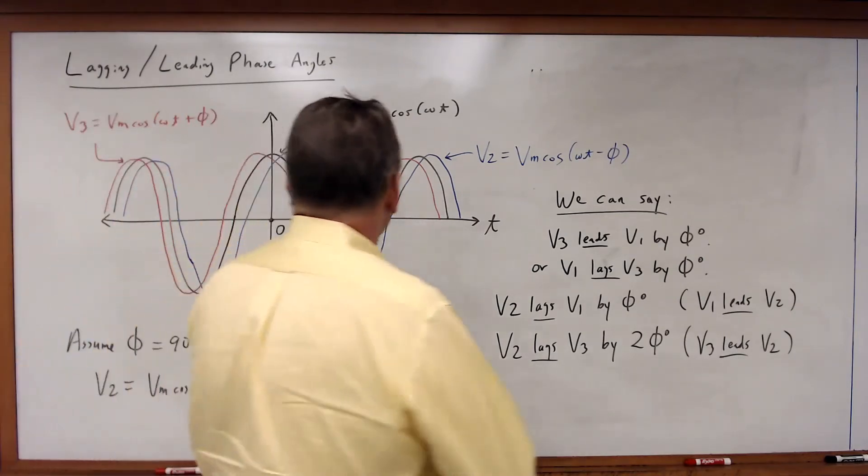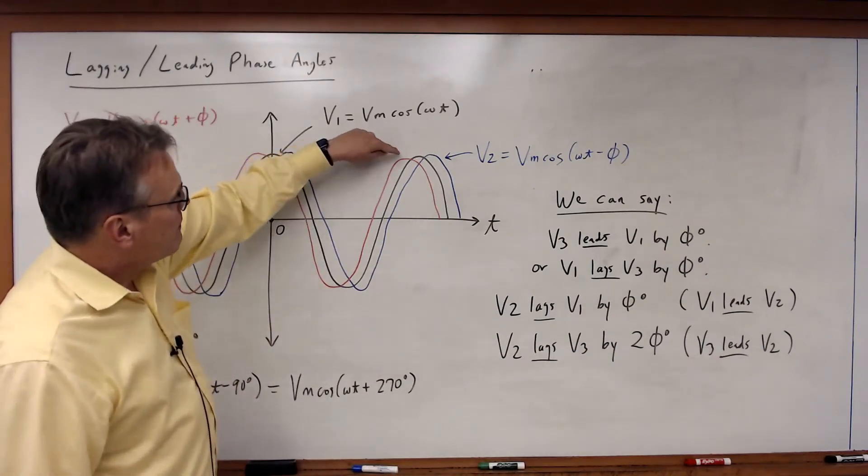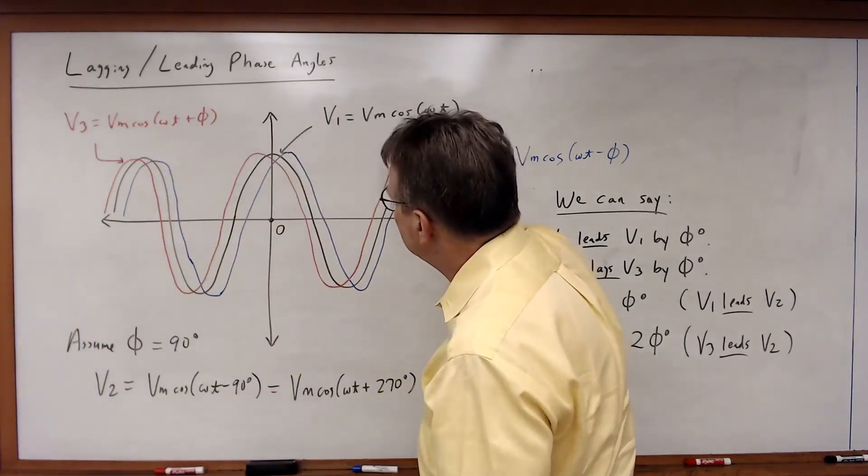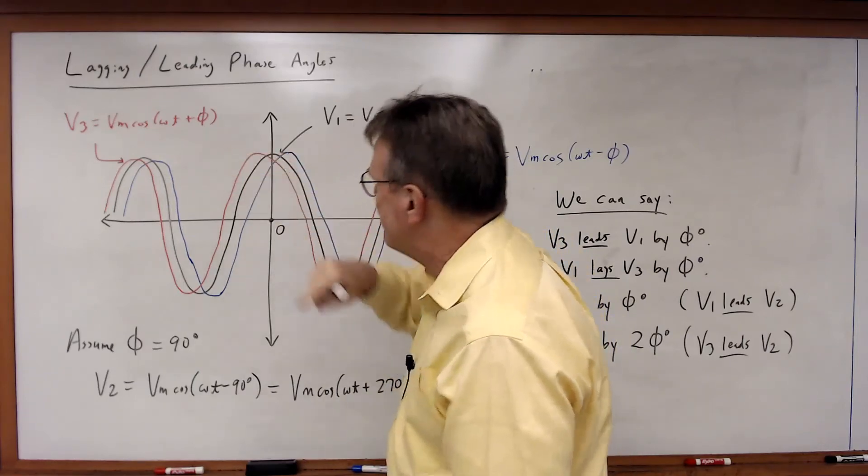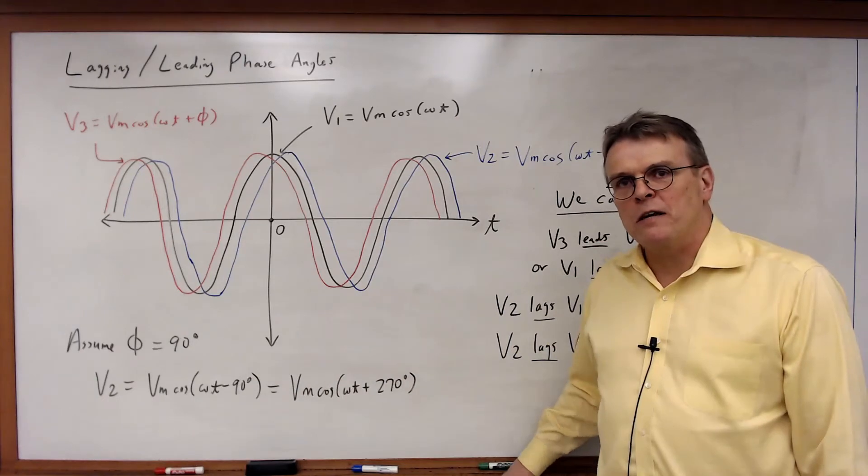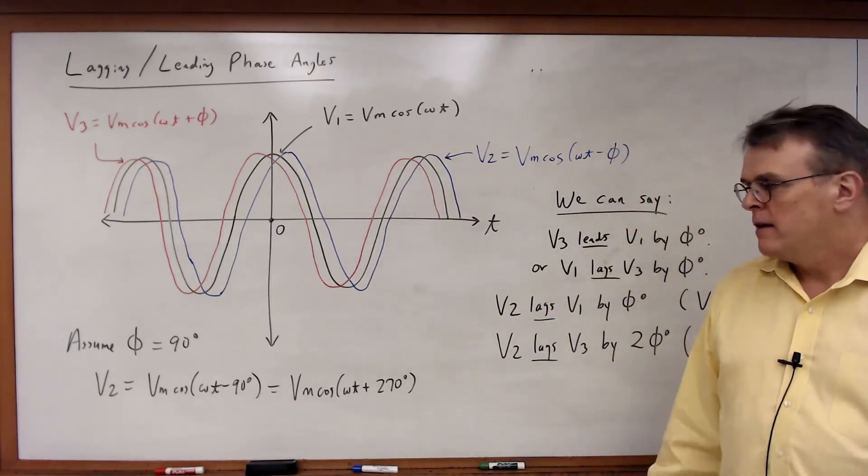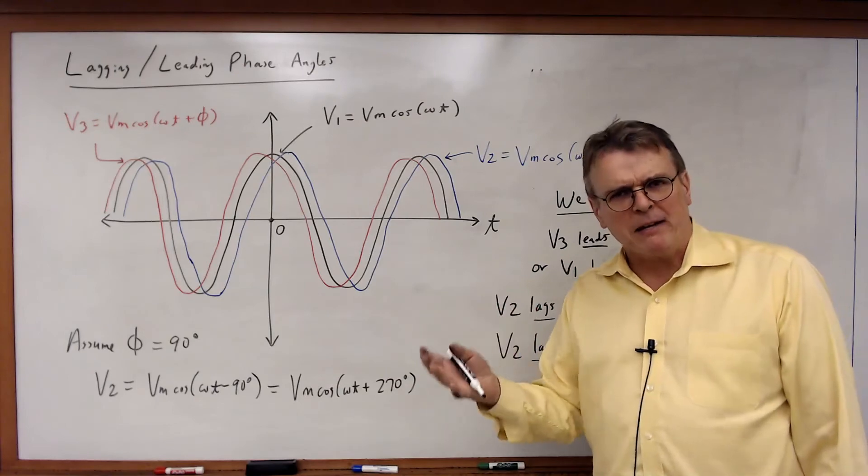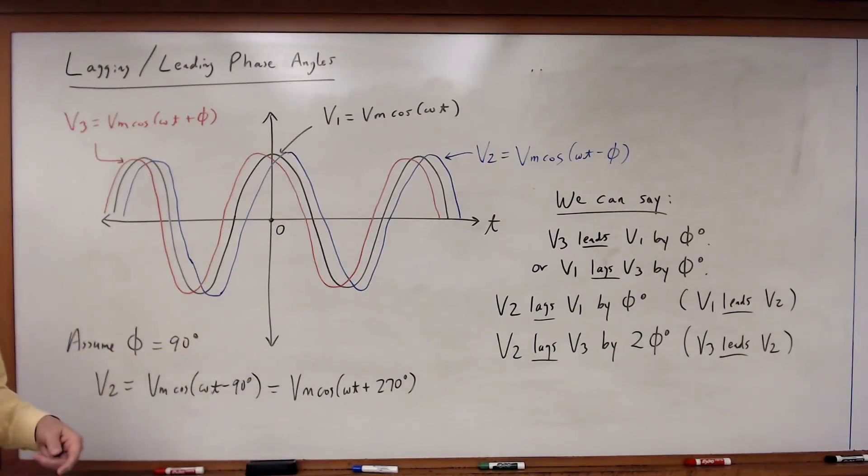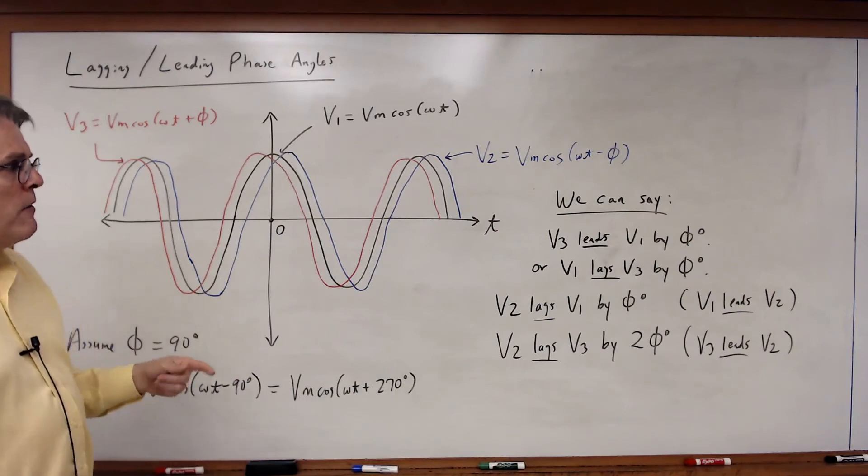So when you look at this you can say, here v3 is leading v1, but couldn't you also say that v3 is lagging v1 if you looked at that peak back there? So really when you think about it, by adding or subtracting 360 degrees you can make any voltage lag or lead any other voltage along this time axis. So it kind of looks like leading and lagging might be a little bit arbitrary. Well, a long time ago people realized this was true, but it was also confusing.